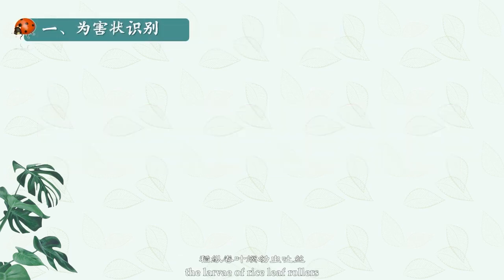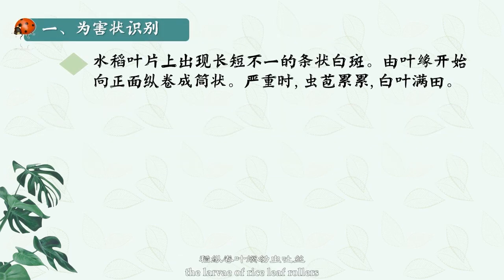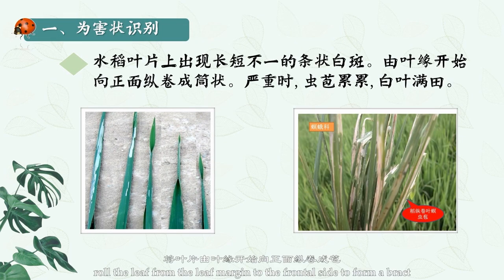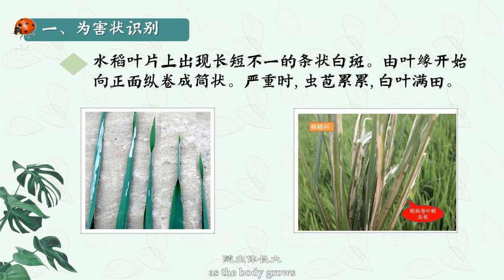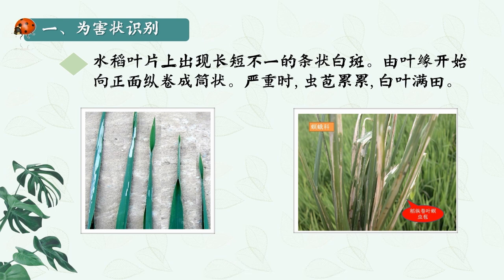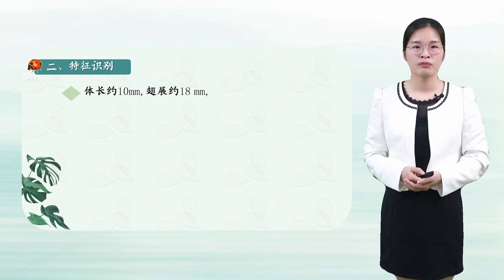The larvae of rice leaf rollers roll the leaf from the leaf margin to the frontal side to form a bract, which feeds on the upper epidermis and leaf flesh, leaving only the white lower epidermis to form strips of white spots of varying length. As the body grows, the larvae continue extending the bracts forward.